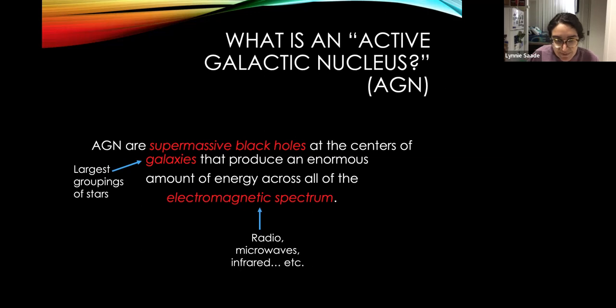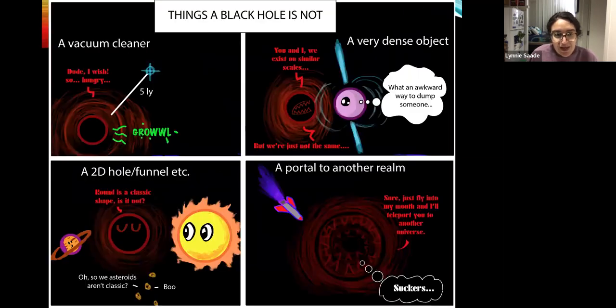And the electromagnetic spectrum is just all the different kinds of light, including the ones we cannot see like radio waves, microwaves, infrared x-rays and all that. But you might be wondering what in the world is a supermassive black hole. Well, first we need to define what a black hole is, and we can start by defining what a black hole is not, and then drawing from that to tell what a black hole is.